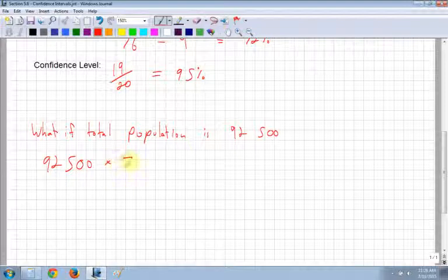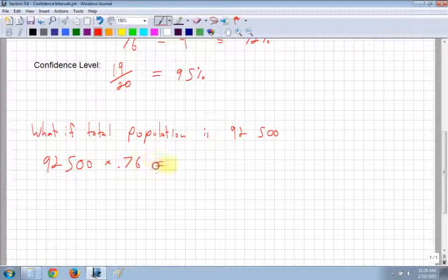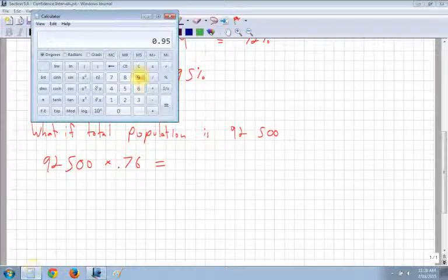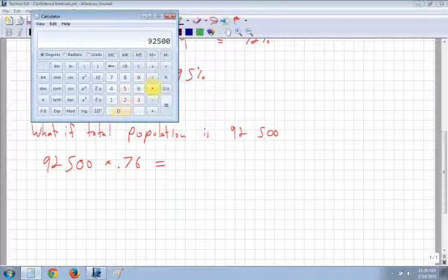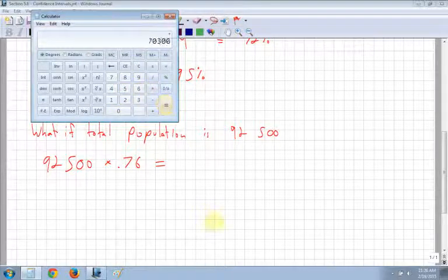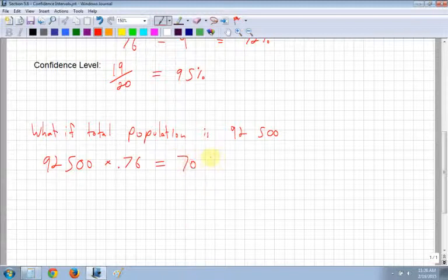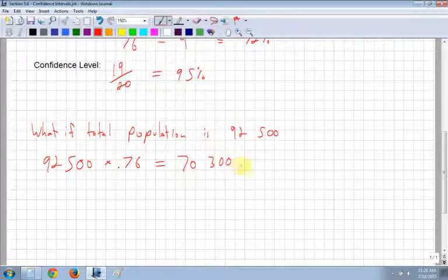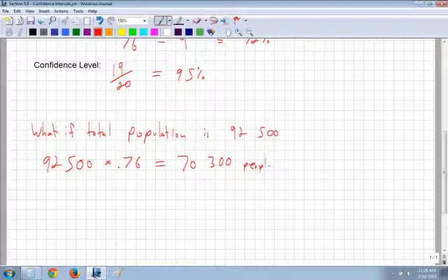So we would say that 76%, 0.76 as a decimal, have social networking. So we have your 92,500 times by 0.76. So we would say that 70,000, based on this survey, 70,300 people have social networking.